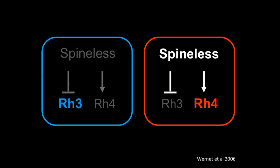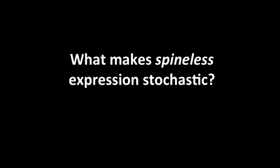So in R7 cells that express spineless, we get activation of rhodopsin 4, and in R7 cells that lack spineless, we get activation of rhodopsin 3. And for the purposes of this talk, I'll be showing rhodopsin 4 as a direct output of spineless.